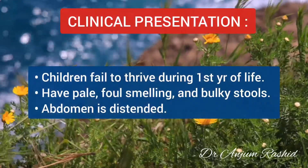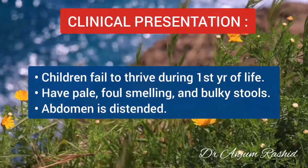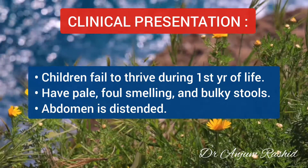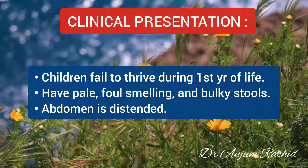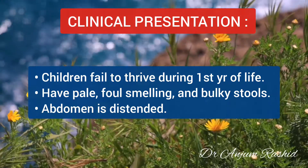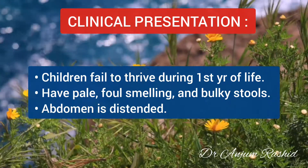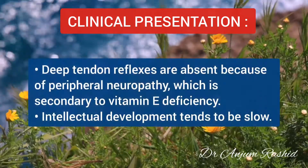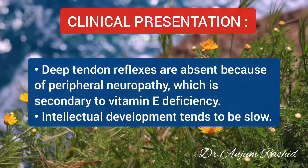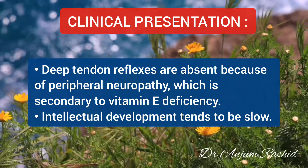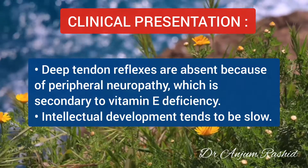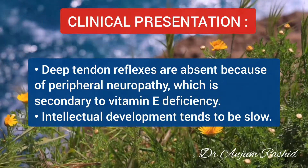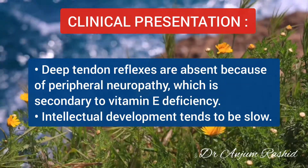Now the clinical presentation. Children fail to thrive during the first year of life. They have pale, foul-smelling and bulky stools. The abdomen is usually distended. Deep tendon reflexes are absent because of peripheral neuropathy caused by deficiency of vitamin E, and intellectual development is slow.